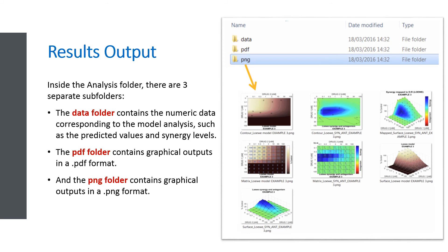Inside each analysis folder, there are three separate subfolders. The Data folder contains the numeric data corresponding to the model analysis, such as the predicted values and Synergy levels. The PDF folder contains graphical outputs in .pdf format, and the PNG folder contains graphical outputs in .png format. If the user is interested in displaying further graphical outputs, a new analysis can be run via the Run Analysis button, having pre-selected the additional plots. These graphics will be automatically saved in the appropriate model folders.